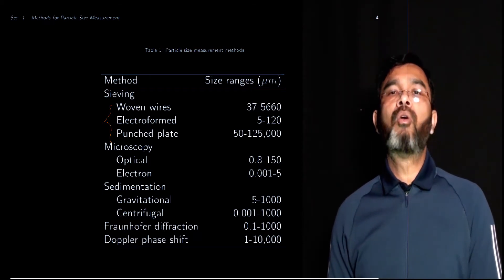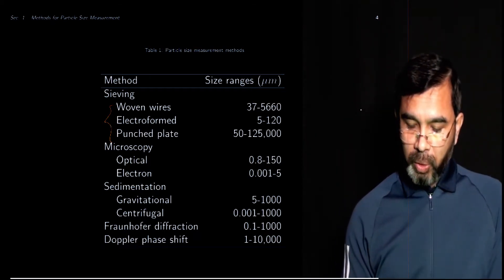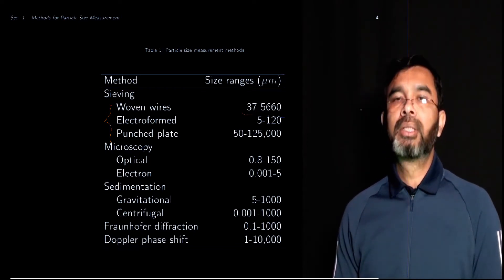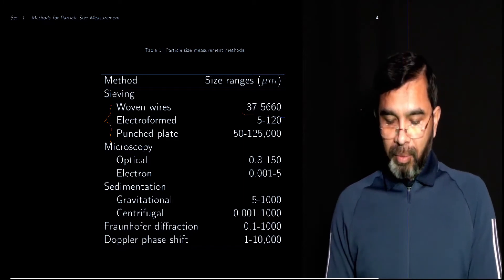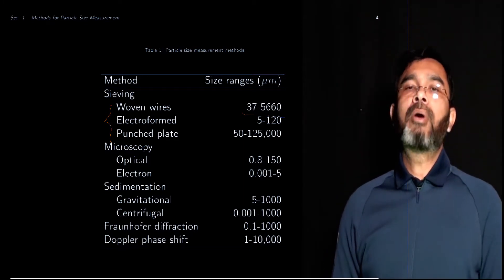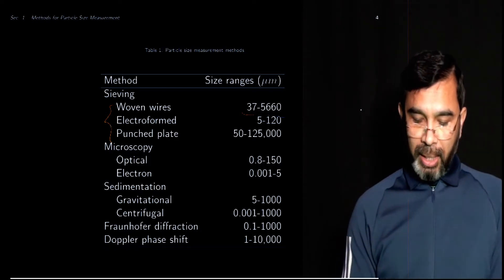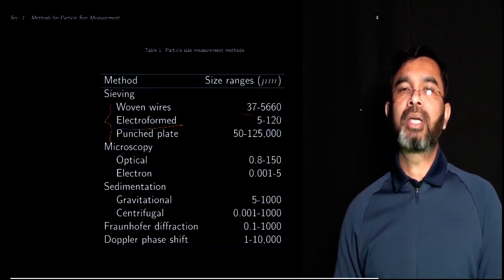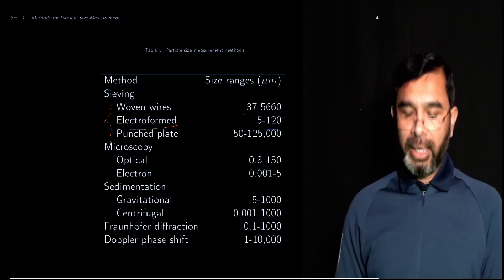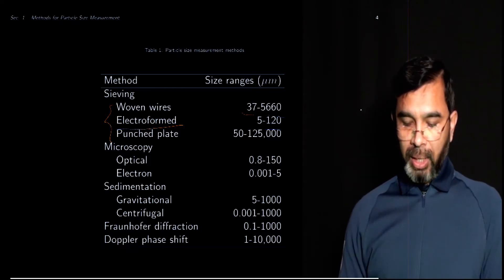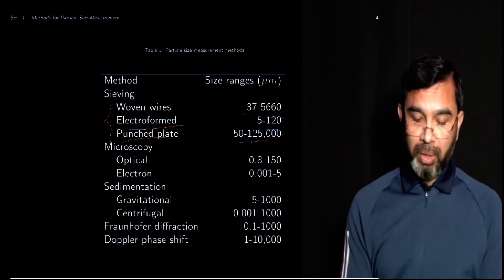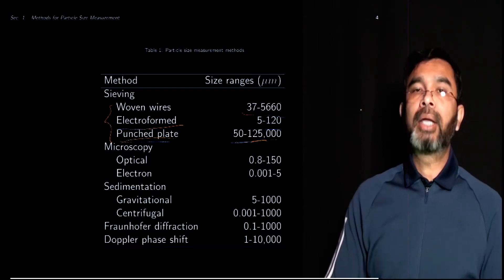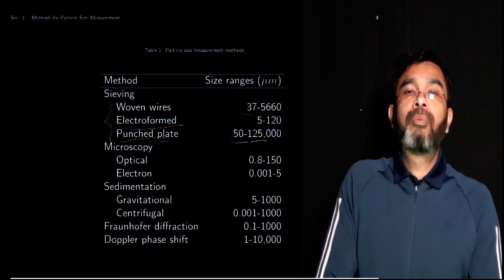For example, woven wires are used to measure particles between 37 microns and over 5 millimeters. There are other types of screens, such as electroformed, which is used to measure typically small particles between 5 and 120 microns. There are punched plates, which are used to measure large particles from 50 microns to around 125 millimeters, which is 12.5 centimeters. Those are mainly used in the mining industry where large particles or large rocks are involved.